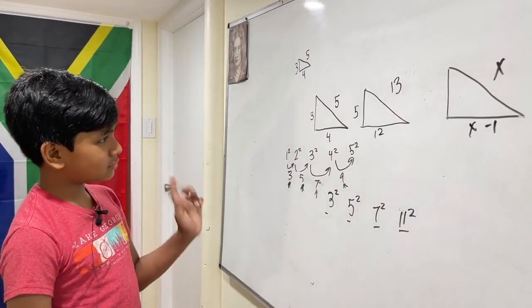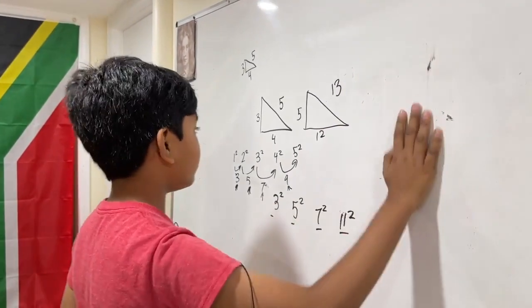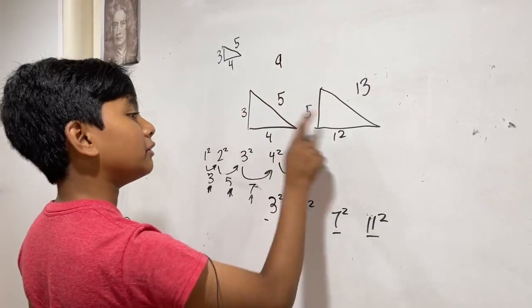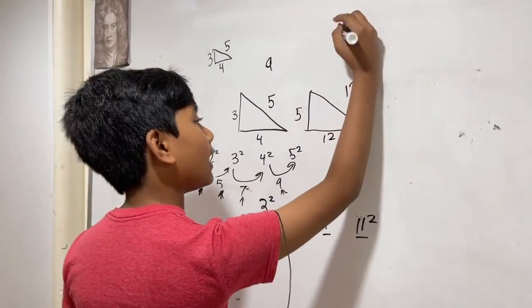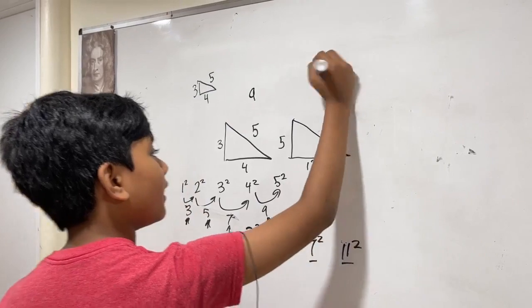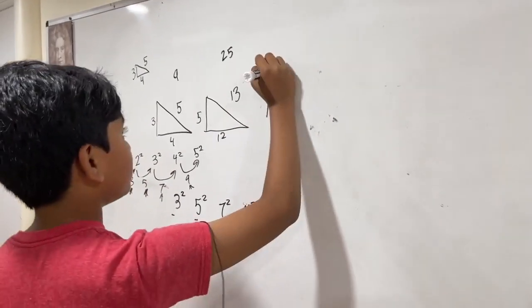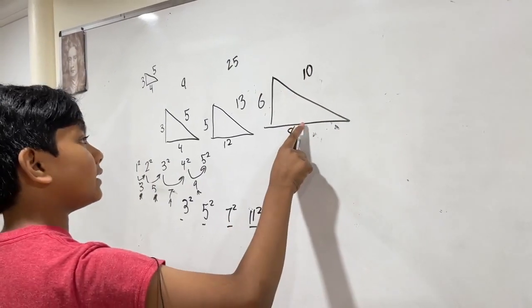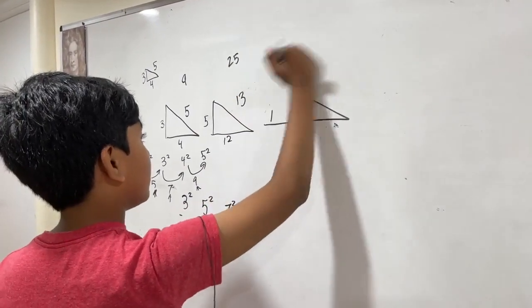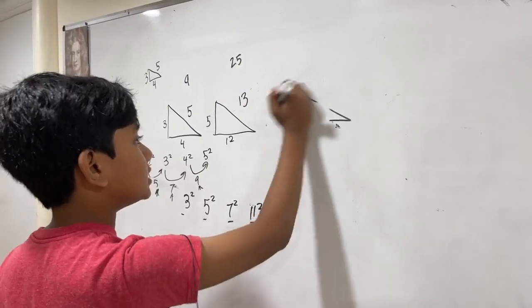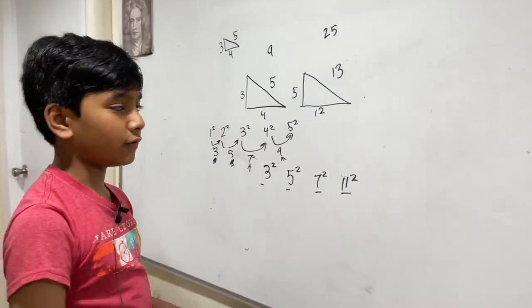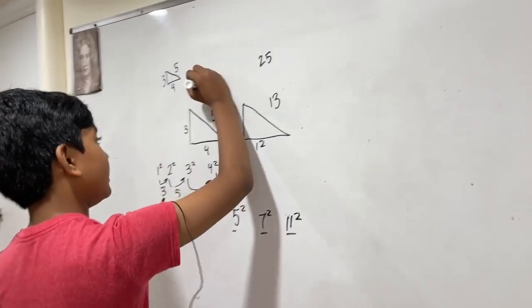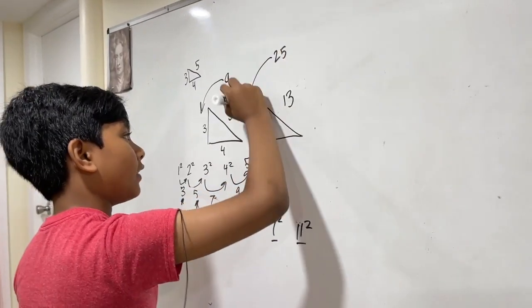Just now, I'm coming to a realization. If we take 4 and 5, the two biggest sides here, and add them together, we get 9. We take 12 and 13, we add them together, we get 25. So 9 is 3 squared, 25 is 5 squared.